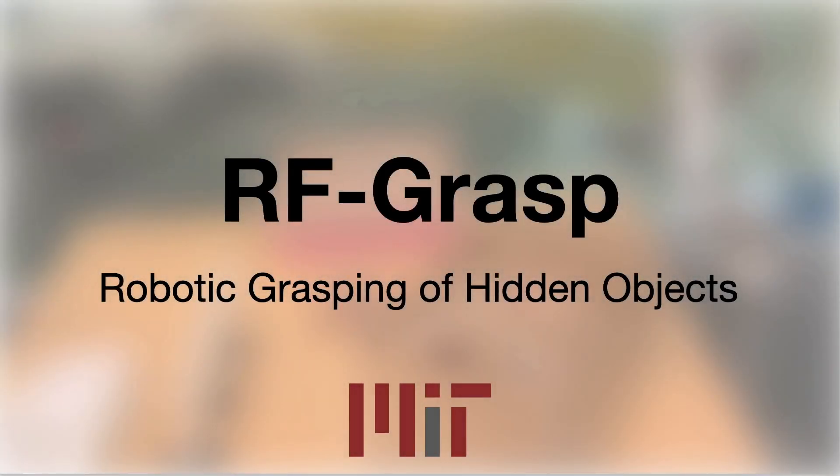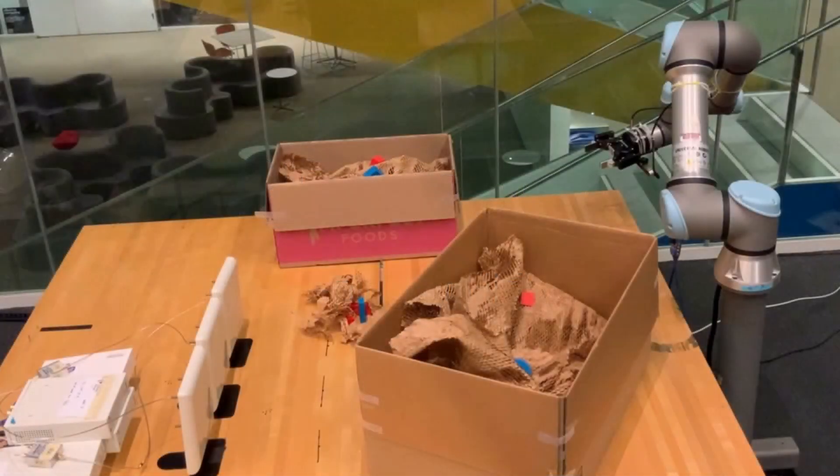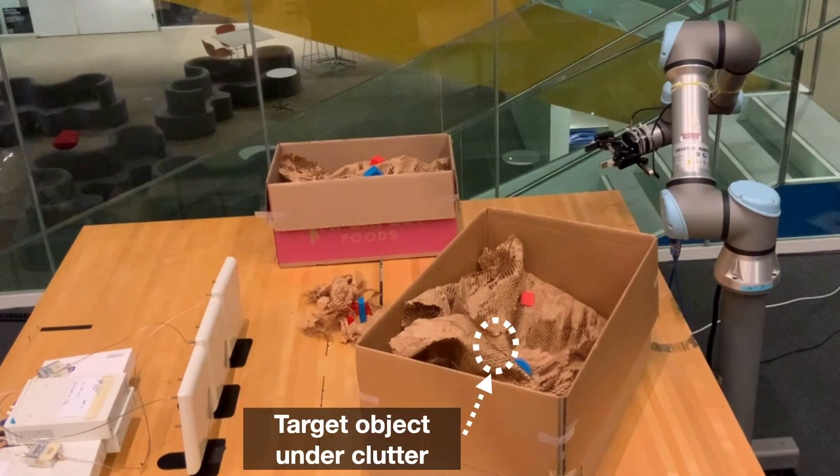This video presents RFgrasp, a system from MIT that enables robotic grasping of hidden objects. For example, here the robot needs to find and grasp a target object that is under clutter.